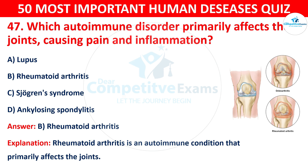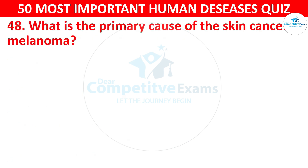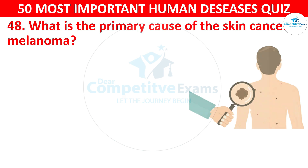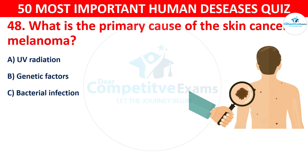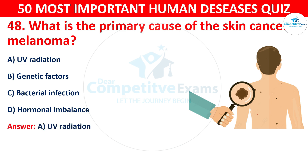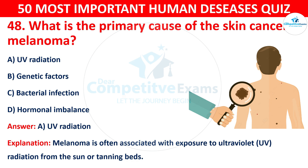Question 48: What is the primary cause of the skin cancer melanoma? Your options are: A) UV radiation, B) Genetic factors, C) Bacterial infection, or D) Hormonal imbalance. The correct answer is A — UV radiation. Melanoma is often associated with exposure to ultraviolet (UV) radiation from the sun or tanning beds.